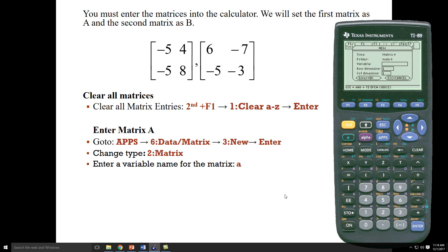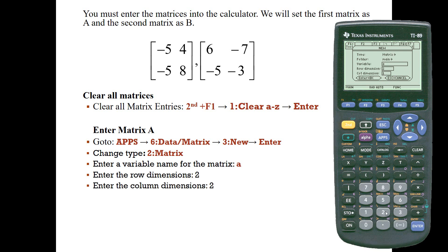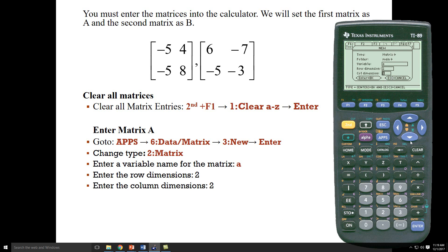Next, we'll give the variable a name. We're going to keep the folder as main, and I'm going to scroll down to variable. I'm going to call my matrix matrix A. I'm going to use alpha, and I'm going to find A, and I'll press enter. And I'll also enter in two columns, and I'll press enter.